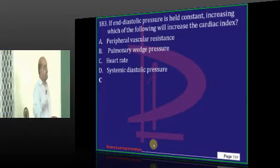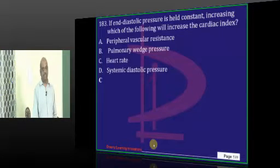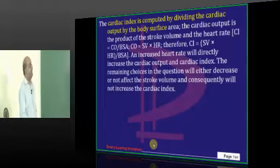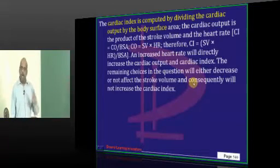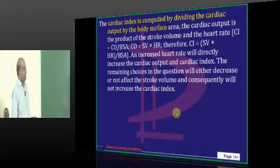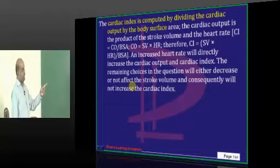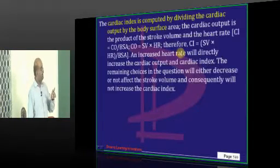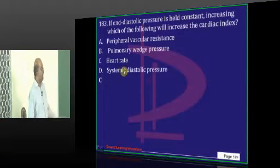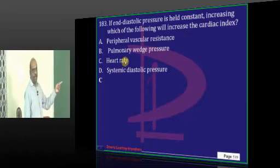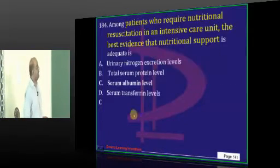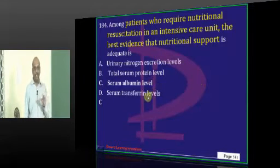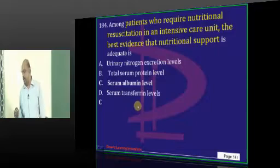If the end-diastolic pressure is held constant, what will lead to an increase in the cardiac index? Cardiac index is computed by dividing cardiac output by body surface area. Cardiac output is the product of stroke volume and heart rate. Any increase in heart rate will increase stroke volume and thereby increase the cardiac index. Albumin is often assessed in the ICU to evaluate nutritional supplementation and support.